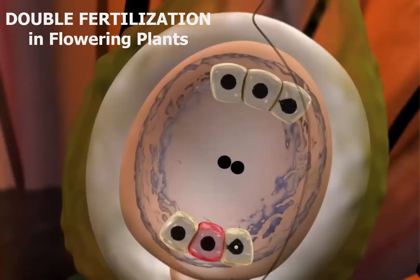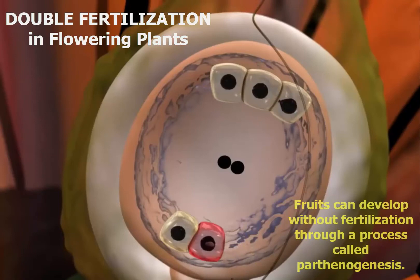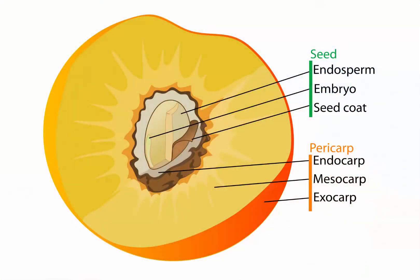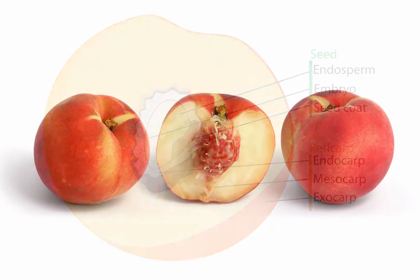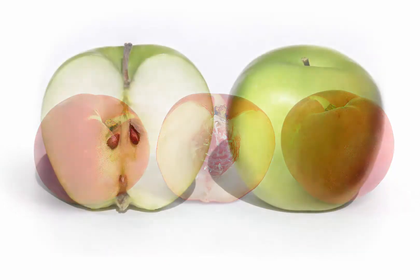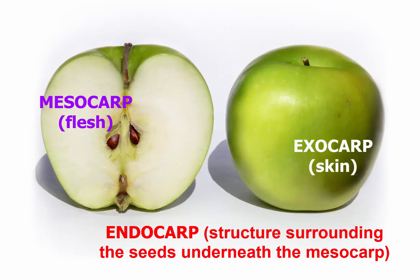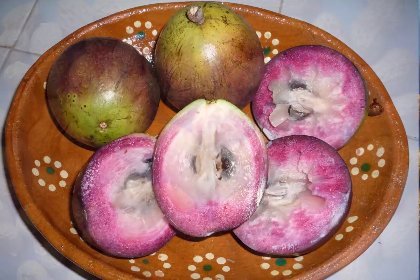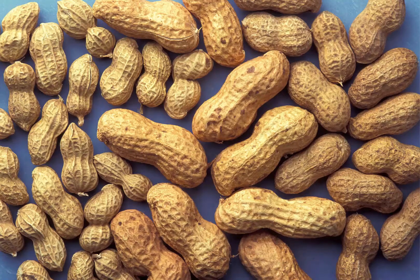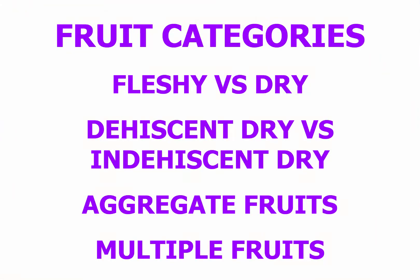Pollen grains and developing seeds also have hormones that stimulate fruit growth and development. Some fruits even develop without fertilization via parthenocarpy. A typical mature fruit has three regions collectively known as the pericarp. The outermost skin forms the exocarp while the inner boundary around the seeds forms the endocarp. The endocarp may be hard and stony as in a peach or papery as in apples, or it may not be distinct from the mesocarp, which is the fleshy tissue between the exocarp and the endocarp.